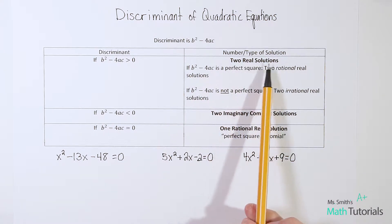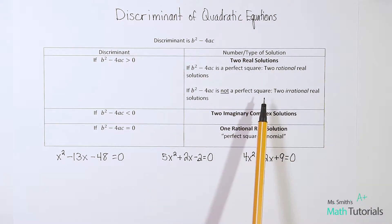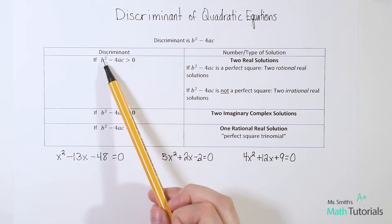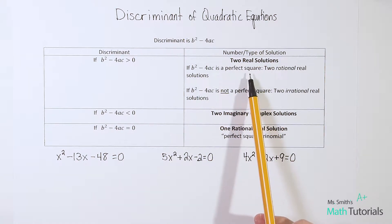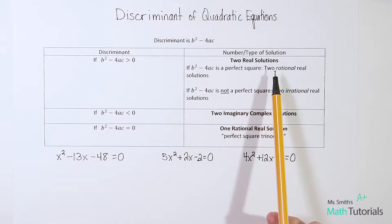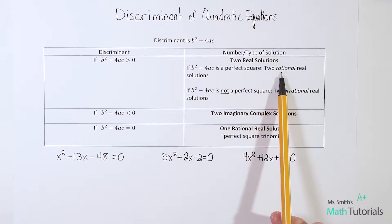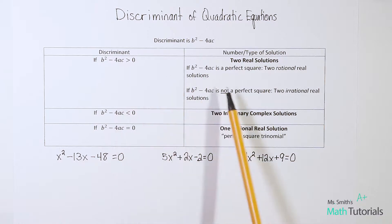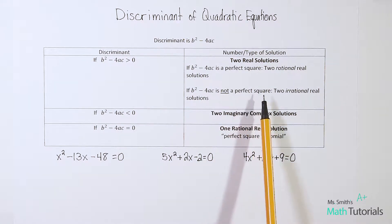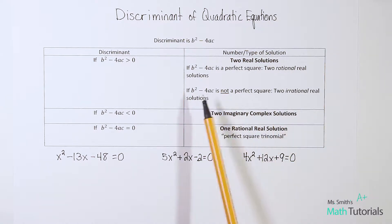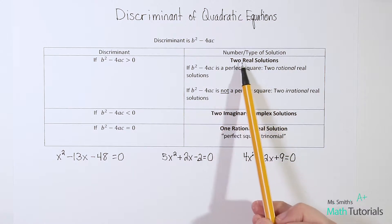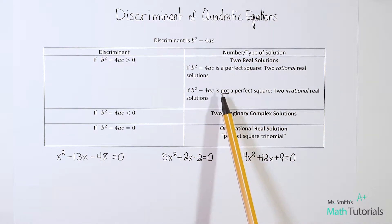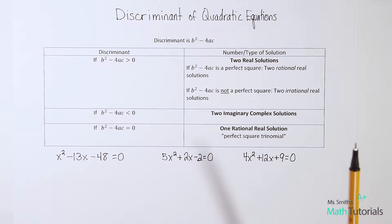Whenever you have two real solutions, you have to take it one step further and ask: is the discriminant a perfect square? If it is, then your answers are two rational real solutions. If your answer is not a perfect square, then you have two irrational real solutions. So within those two real solutions, you have one sub-question to ask: is it a perfect square or not?